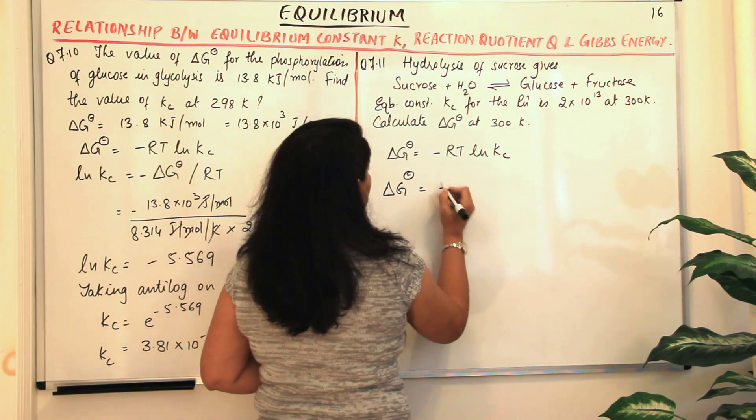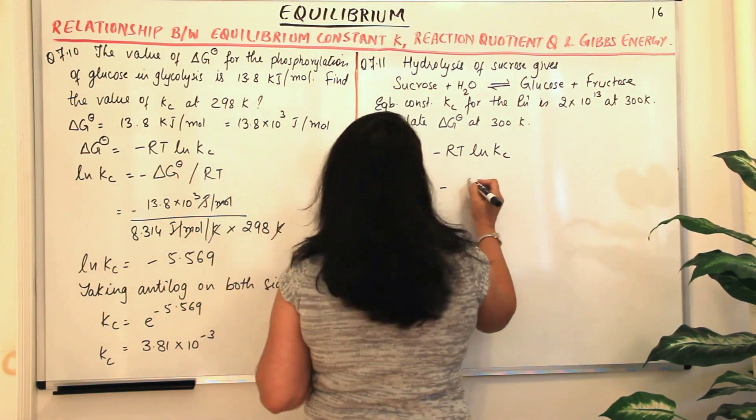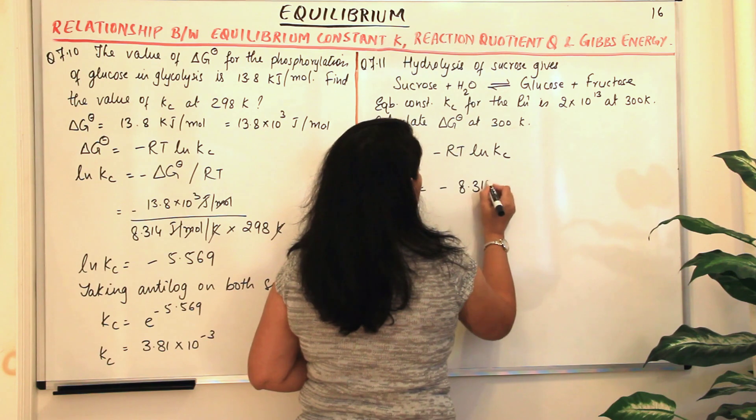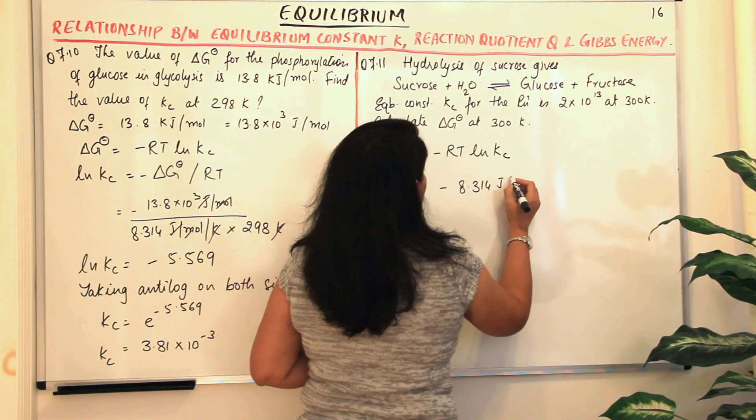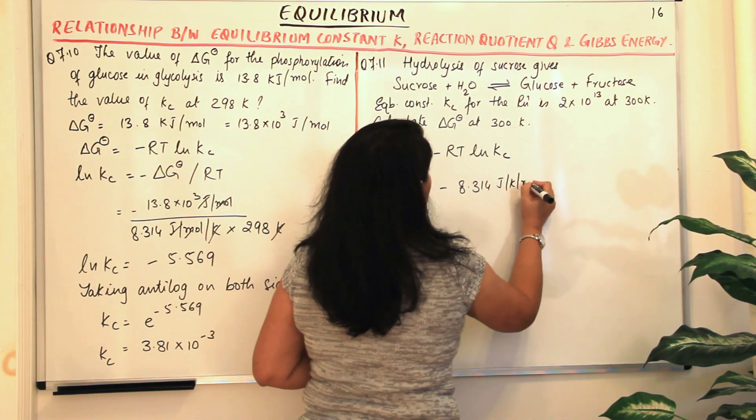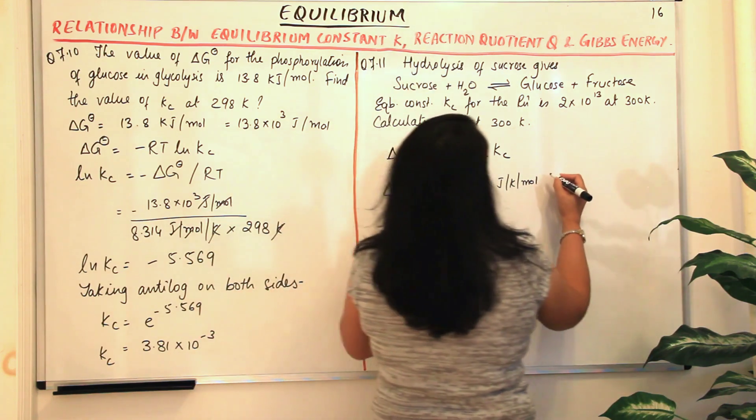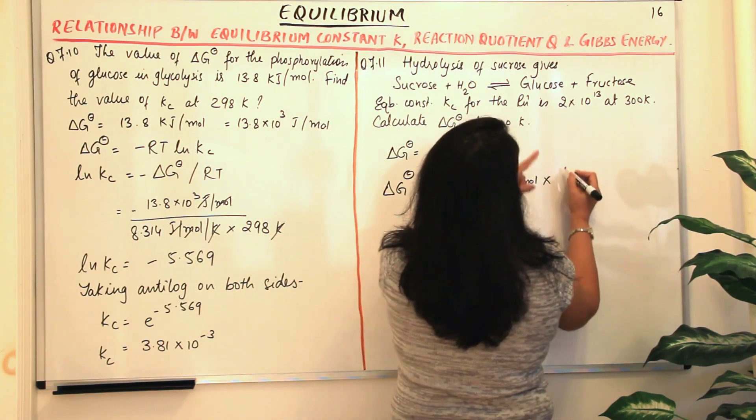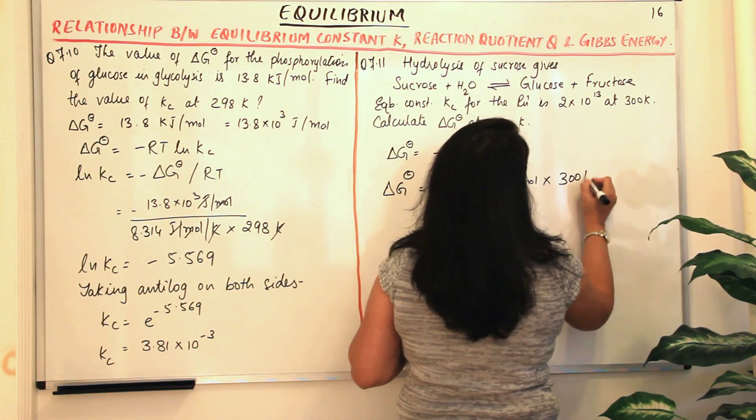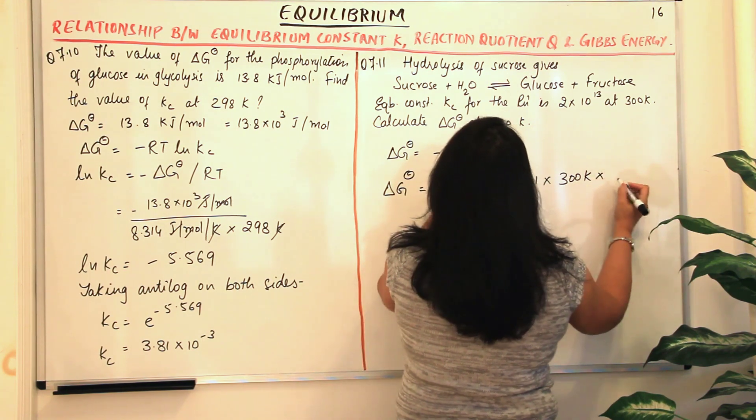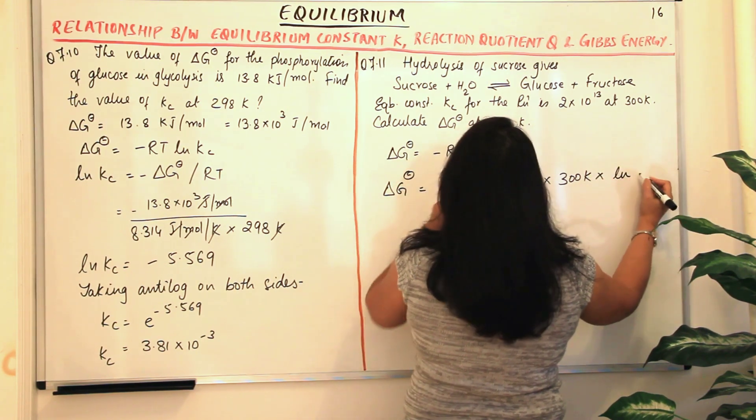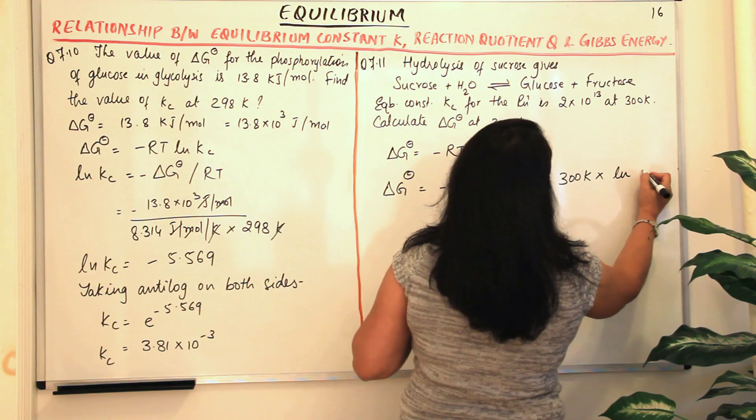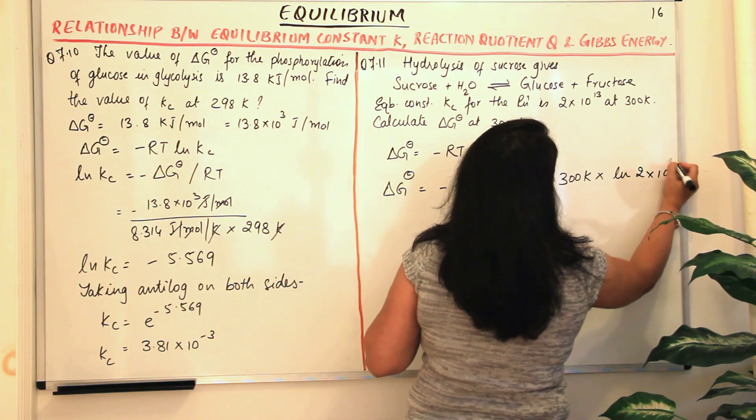So delta G naught would be equal to minus, what is our gas constant? 8.314 joules per Kelvin per mole. And temperature is 300 Kelvin, multiplied by ln Kc. What is Kc? 2 into 10 to the power 13.